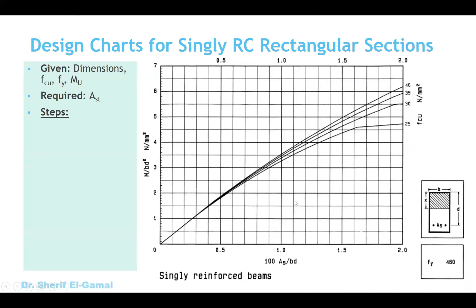We are going to start with the first type of charts, which is for singly reinforced concrete rectangular sections. This is showing one of these charts. We can see this is the rectangular section — we have only steel in the tension side, no compression steel. B is the width of the cross section, D is the effective depth, and X is the distance from the compression face to the neutral axis. This is chart number two, and the FY yield here is 460.